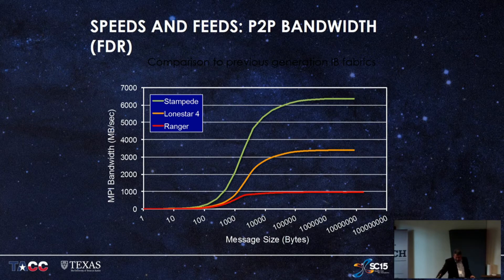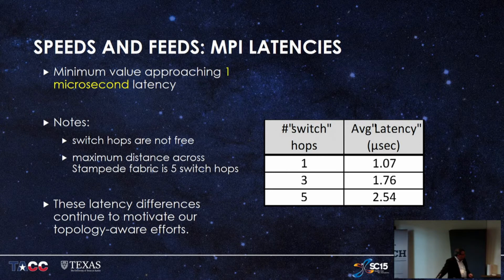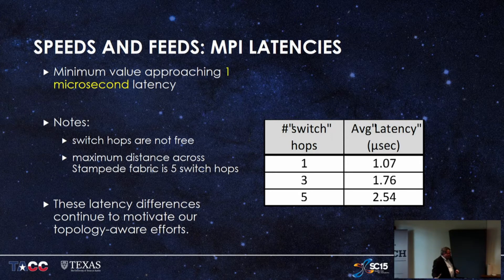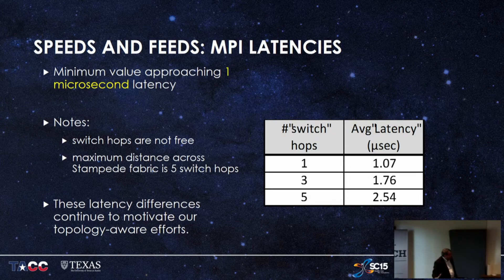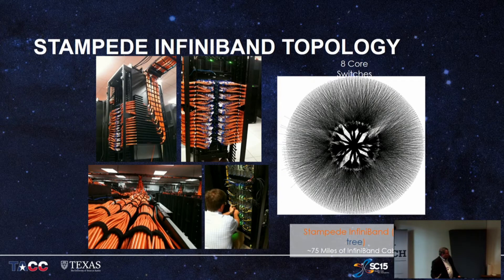We were very happy with our latency — right around a microsecond inside a rack, two and a half microseconds worst case. There's 100 meters of fiber in there across almost 200 cabinets. In the five-hop case with two switches and a big core switch, you start to see big latency differences depending on where you are. So with the team here, we started on some topology-aware grants. We had 75 miles of fiber on top of the machine, and about 11,000 InfiniBand cables to run.